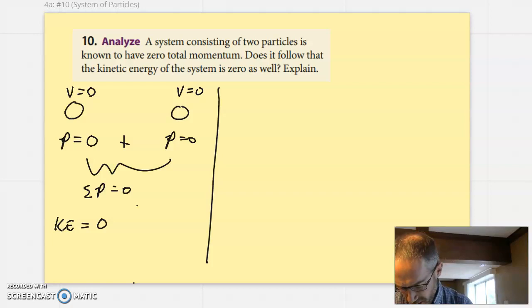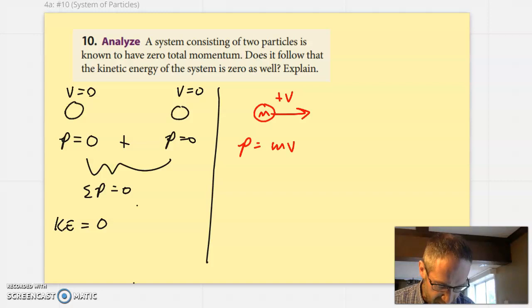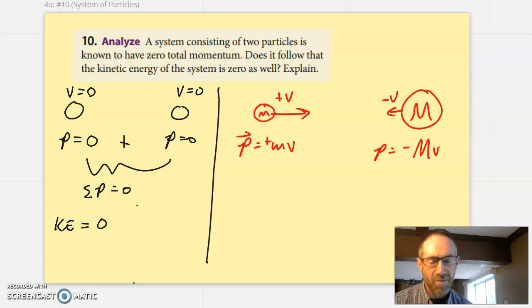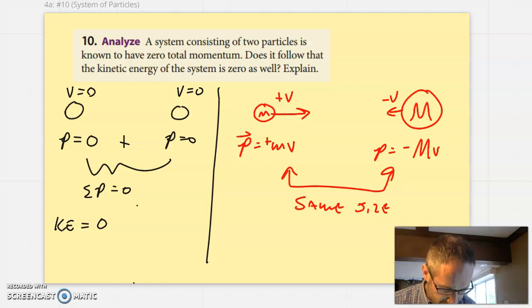What you could have is something moving to the right with positive velocity and a certain mass, so its momentum is mass times velocity, and we'll say that's positive. You could have another thing, maybe gigantic like this but moving really slow to the left, with negative velocity, so its momentum will be negative. You could imagine numbers that would work out to be the same size but different directions, so you could have a total momentum of zero, but the kinetic energy is not zero.